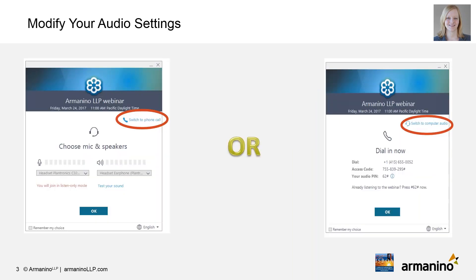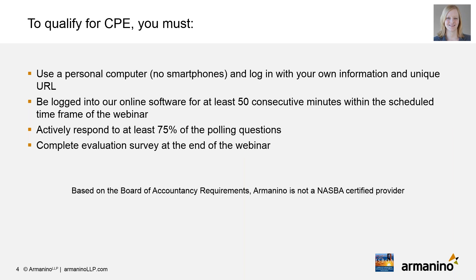Regarding audio settings: to ensure good audio quality, if you're using a telephone click on the phone call audio option; if you're listening through the computer click on the computer audio option. For CPE requirements: you must use a personal computer with your own unique URL, be logged in for at least 50 consecutive minutes, and actively respond to at least 75% of the polling questions — there are four, so you need to answer three.